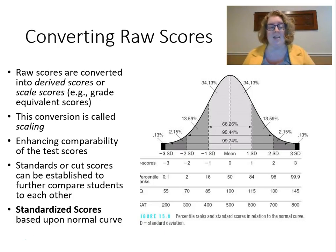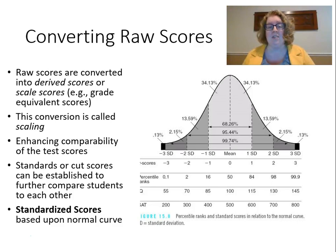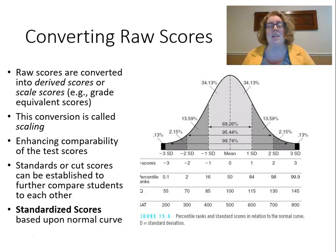Standardized scores — when you hear that term, it means it's based upon the normal curve, and that's a hint that it's from a norm reference test. All of the scores we're talking about today are norm referenced because they're part of a normal distribution. It's all related to how students did in comparison to each other. These are scores that would be given to us by a school psychologist based upon a raw score on a test already taken.